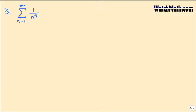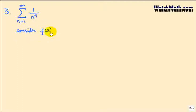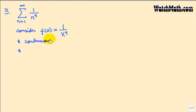Problem number three: we want to find out whether this series is convergent or not through the integral test. Before we are able to use the integral test, we need to check that all requirements are met. First, consider the function f(x) = 1 over x to the 4. Clearly, f is continuous and positive.